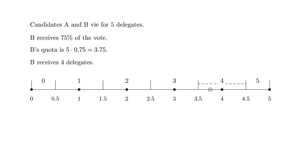Here's an example of how the process works. Candidates A and B are running in a district with five delegates. Candidate B receives 75% of the vote, which corresponds to 3.75 delegates. This is called a quota.